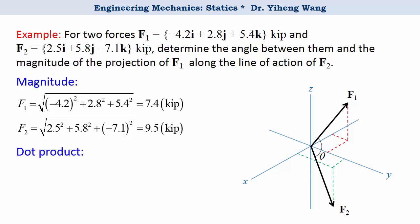Now for the dot product, we're going to use the algebraic equation by finding the sum of the products of their respective coordinates to be negative 32.6. Notice that it does have a unit of kip squared.